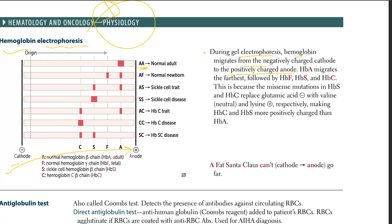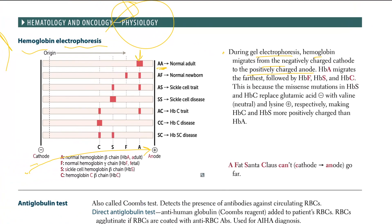HbA migrates the furthest. Look at HbA — nothing is overlapping with HbA because it is the furthest. Followed by HbF in the second position, then HbS — which corresponds to the sickle trait — and then HbC.